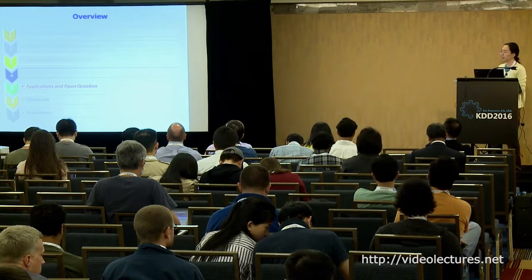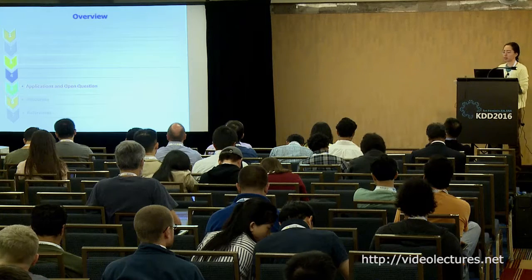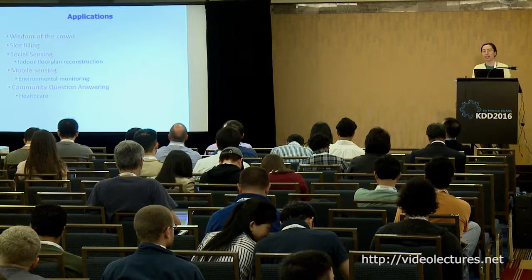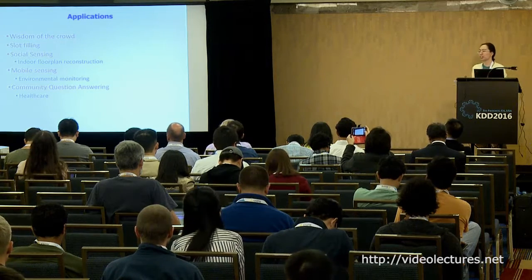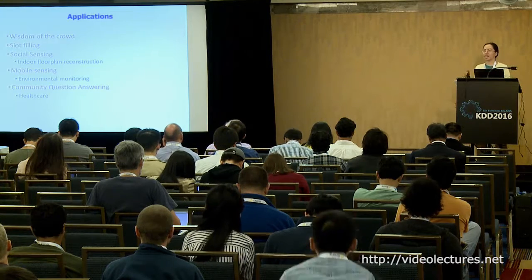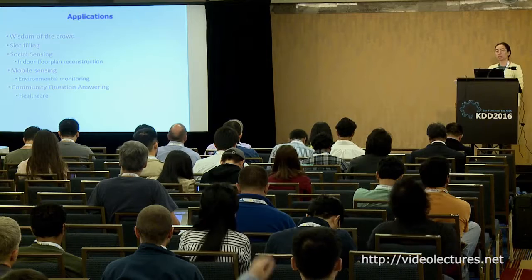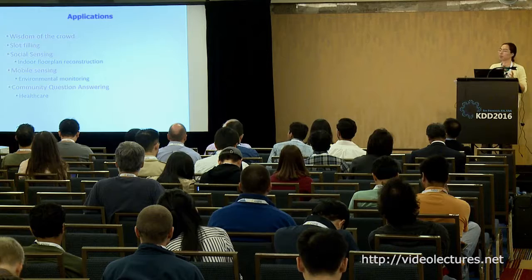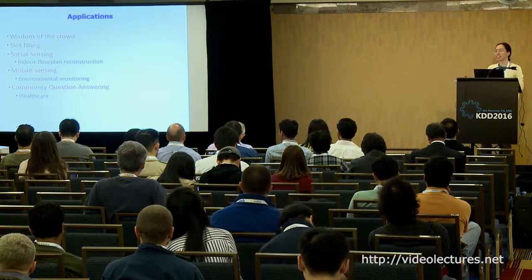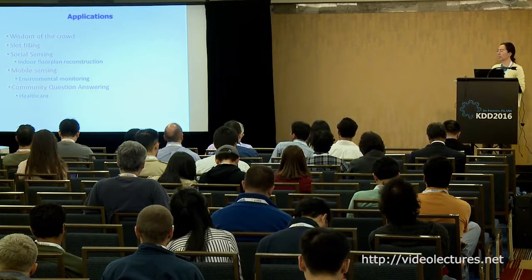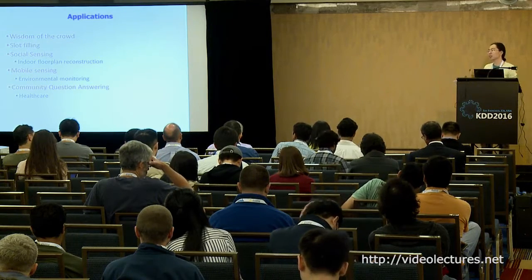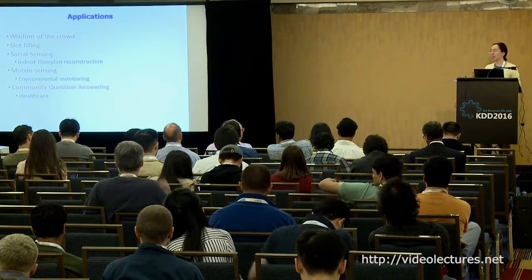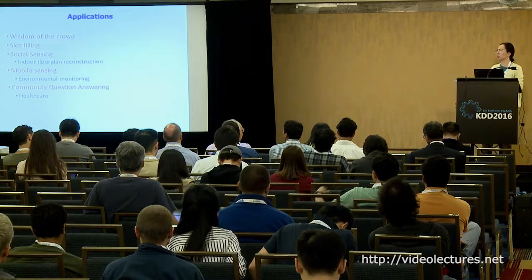Now I will talk about some applications and open questions in crowdsourcing scenarios. We divide crowdsourced data into two groups: active and passive. But there are many applications that blur the boundary between active and passive. We find that passive crowdsourcing is usually collected passively with an open-domain answer space, while active crowdsourcing is usually actively collected with a closed-domain answer space. The applications listed here are kind of mixed — they can be actively collected but have an open-domain answer space.